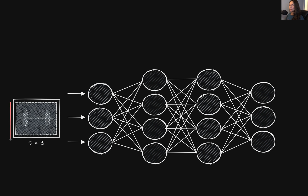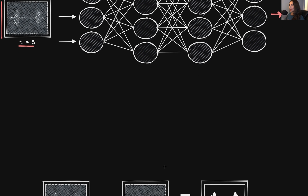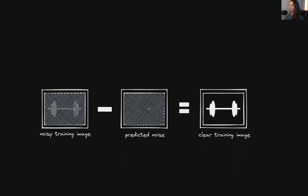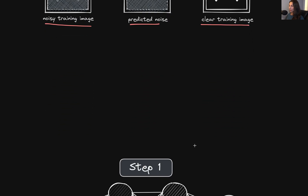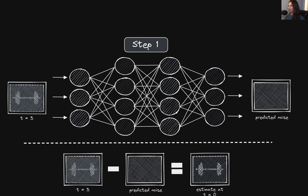Now we'll go through an example to show this denoising over several steps. Suppose we have a training image for which the noise scheduler has added noise corresponding to T equals three, and we want the network to predict the total amount of noise present. In a perfect world, the end result would be the perfectly clear training image — the network would perfectly predict all of the noise such that when we subtract it from the noisy training image, we have a perfectly clear image at T equals zero, meaning the training image with no noise added. In reality, however, this is not actually the case.